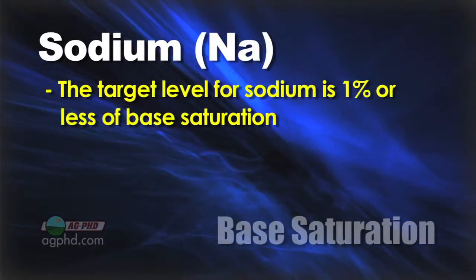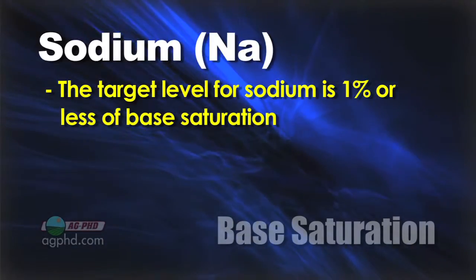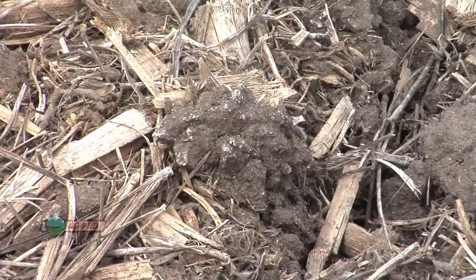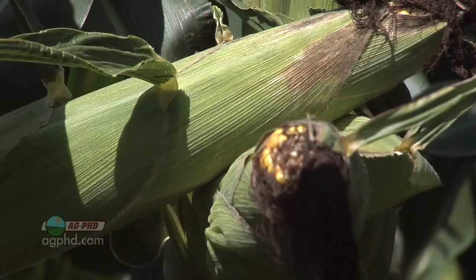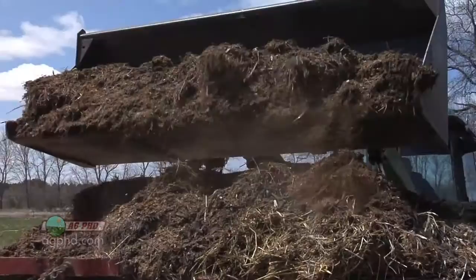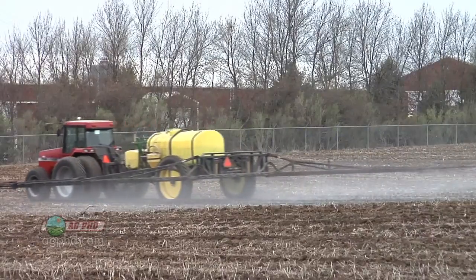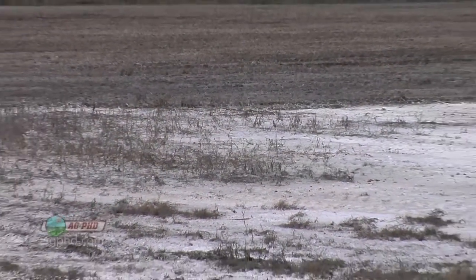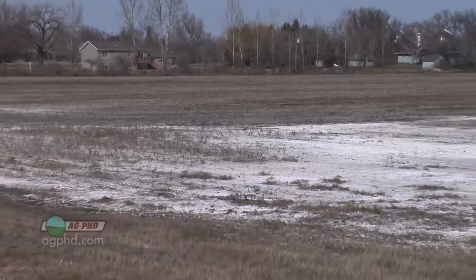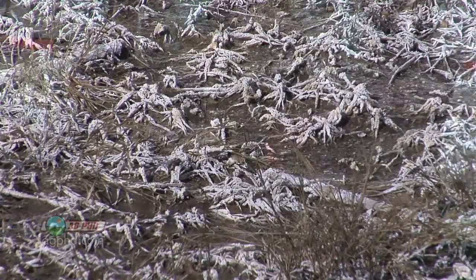With sodium we want to see base saturation at 1 percent or less. Plants need sodium, but just a tiny bit. If you've got 2 percent you've got twice as much as you need, and excessive sodium is going to hurt your yields. If you have high sodium: first, if you're applying manure you're probably applying too much; second, cut back on high-salt fertilizers; and third, sodium can leach out of your soils — salt compounds move with water, so if you have a drainage issue that could be causing a salt buildup. You may need to improve your drainage.